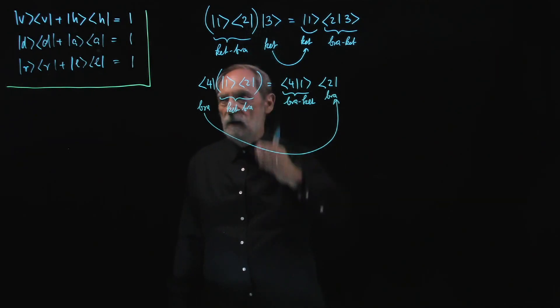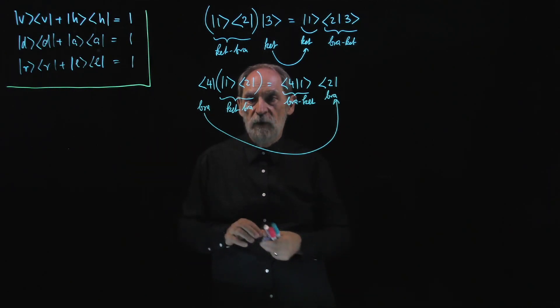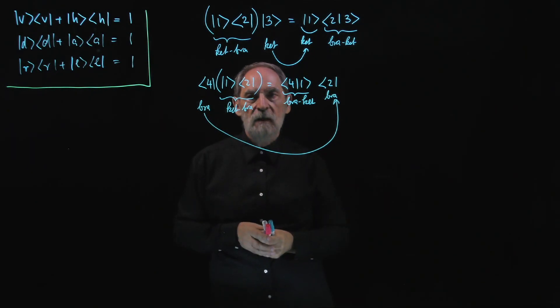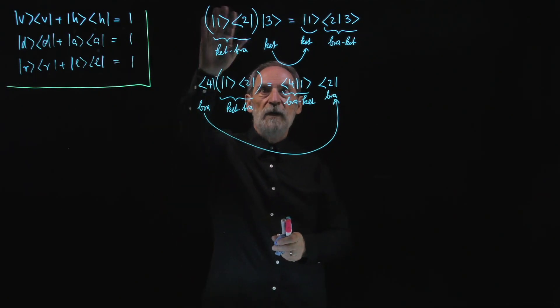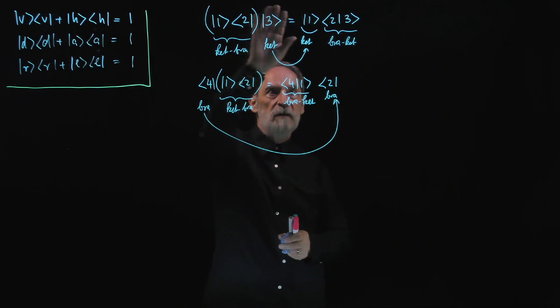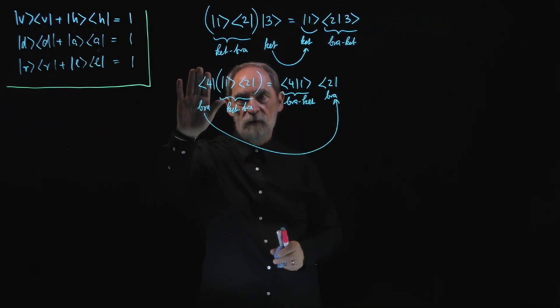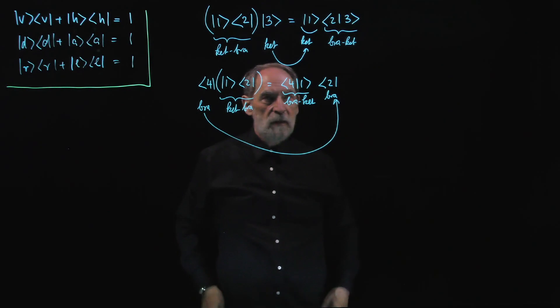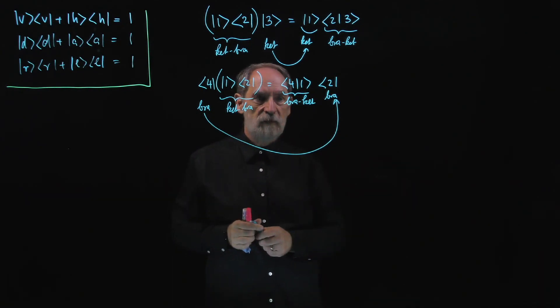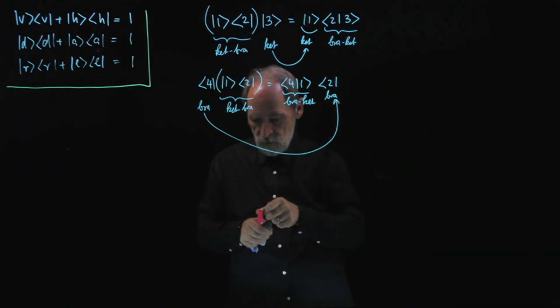We apply the ket-bra to a ket, we get another ket. We apply the ket-bra to a bra, we get another bra. Now remember, kets are numerically represented by columns of numbers. Bras are numerically represented by rows of numbers. A ket-bra is numerically represented by a matrix. So if here we would have a matrix times a column, well, that's a column, right? So a matrix times a column gives a column. Ket-bra times a ket gives a ket. These ket-bras are objects that operate on kets and give kets, and they operate on bras and give bras.